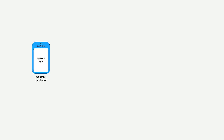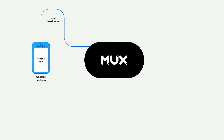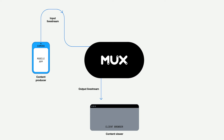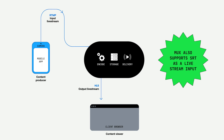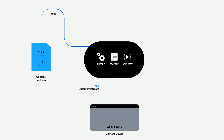Here we're illustrating an example of a content creator using your mobile app to push a stream to Mux, and then your viewers watching the output stream coming out of Mux. Specifically, it's an RTMP stream being pushed into Mux and an HLS stream coming out, with a lot of nitty-gritty in the middle that Mux handles for you — like ingesting, encoding, storage, and delivery. In this case we're talking about live streaming, but keep in mind that for video on demand, a lot of this is still applicable. The input type just changes from a live stream to a file.